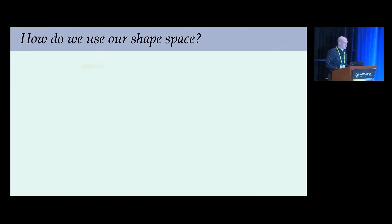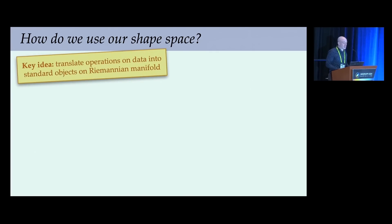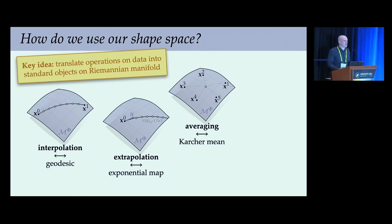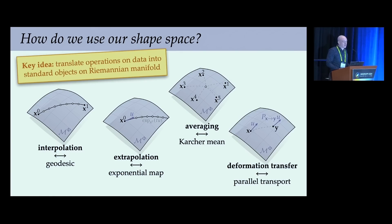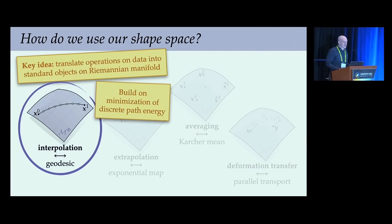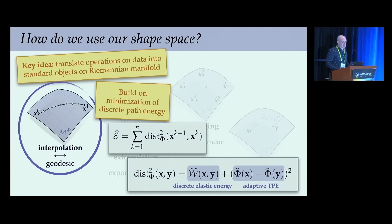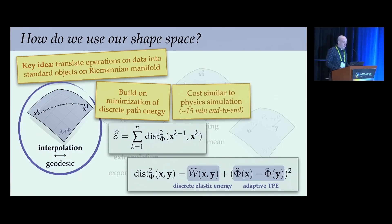The key idea is translating basic operations on shape data into standard objects on a Riemannian manifold: interpolation means computing a geodesic with given endpoints; extrapolation means tracing a curve from a starting configuration and velocity using the exponential map; averaging is the Karcher mean; deformation transfer corresponds to parallel transport. Numerically, all these operations build on minimizing a discrete path energy summing geodesic distances between consecutive configurations, approximated by discrete elastic energy plus the difference in adaptive tangent point energy. The overall cost is about 15 minutes end-to-end.